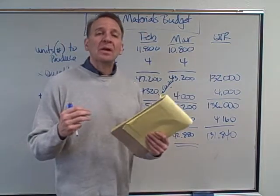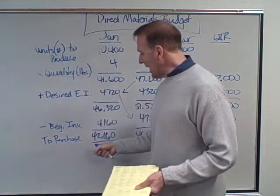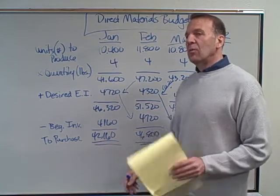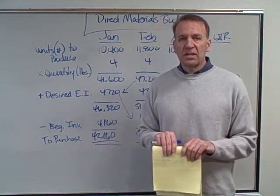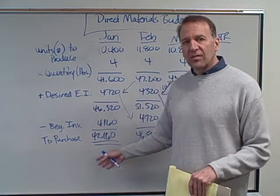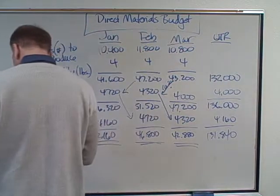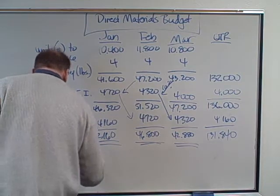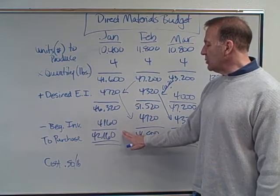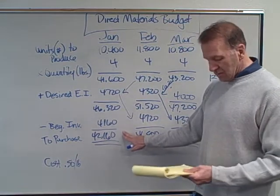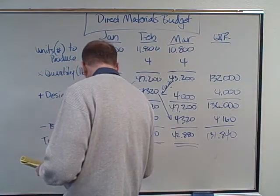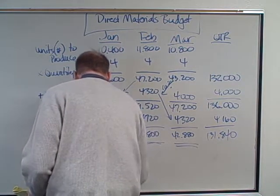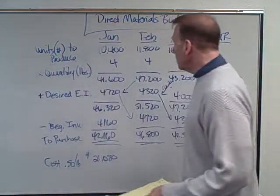These are pounds, not cash figures. One more step common in direct materials budgets: converting to cost. The cost is 50 cents per pound. So for January: 42,160 pounds times $0.50 equals $21,080.